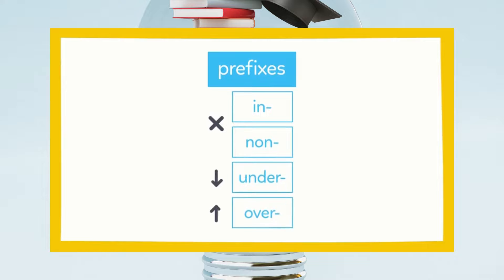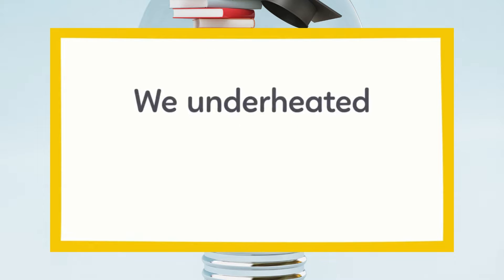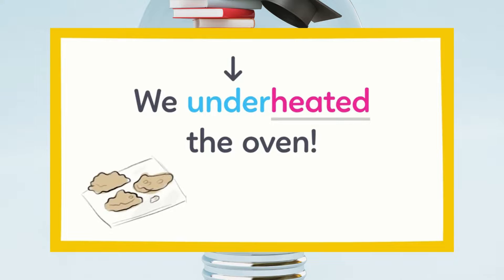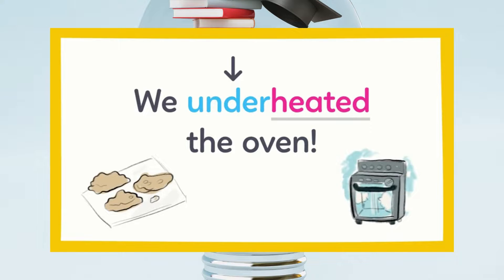Now practice defining words with prefixes on your own. Spike, we underheated the oven. If the oven is underheated, our cookies may be raw, or undercooked in the middle. That's because underheated means that the oven was below the temperature we needed.